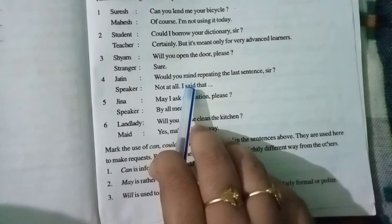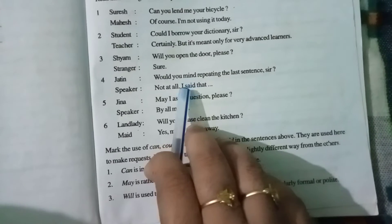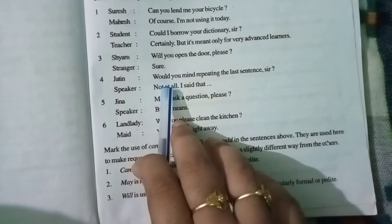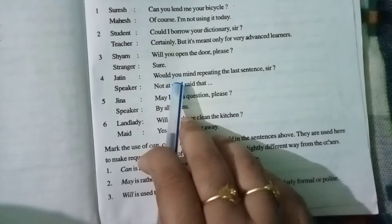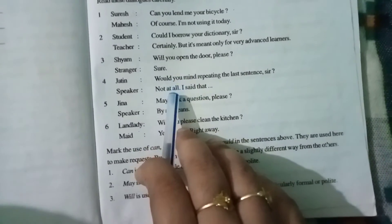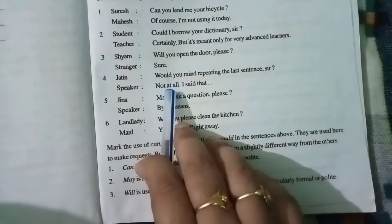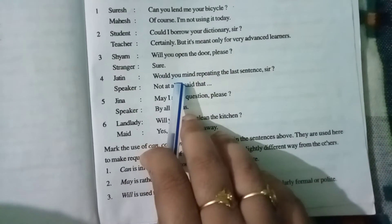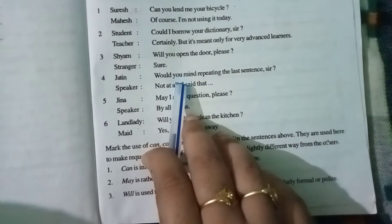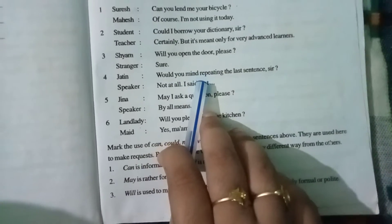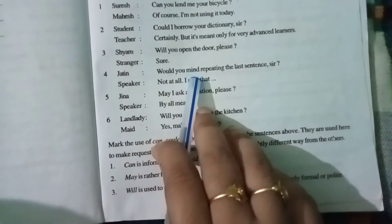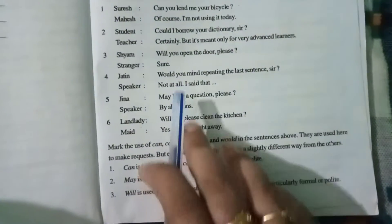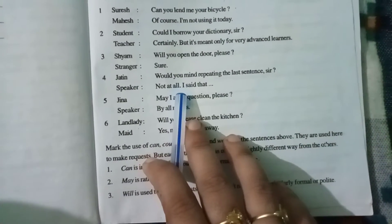Suppose a seminar is going on and in between you are asking the speaker, he may get disturbed from your question. So at the time when we are making any request in such situations or when we are interrupting in such a situation, it means that you must be more polite and more formal at that time. So would is used when we have to be more polite and more formal.